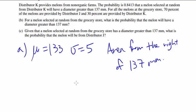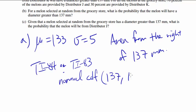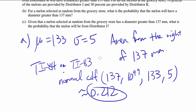And you can use your calculator. If you got TI-84 or TI-83, you can use normal CDF from 137 to 10 to the 99 with mean of 133 and standard deviation of 5. And that should get your answer of 0.212. So that's the answer for A.